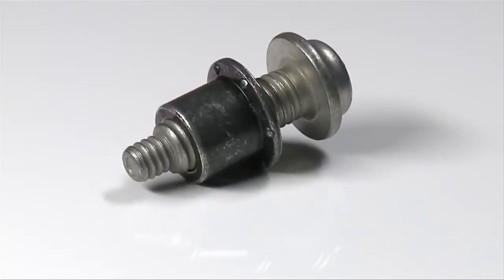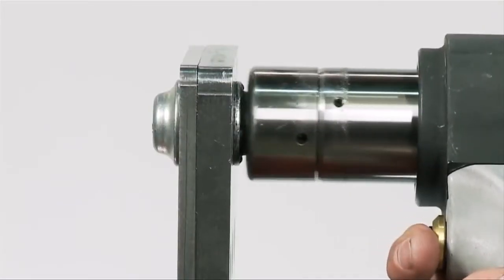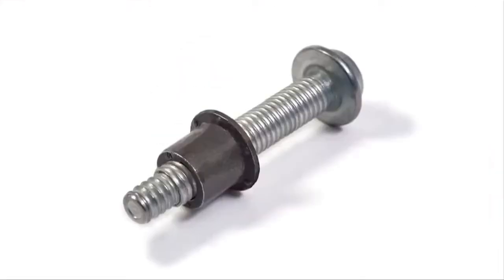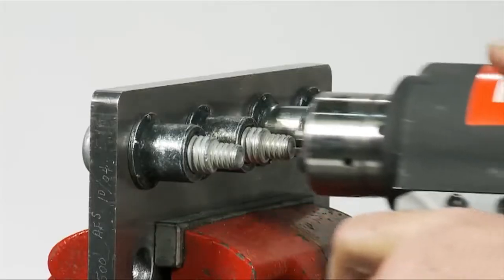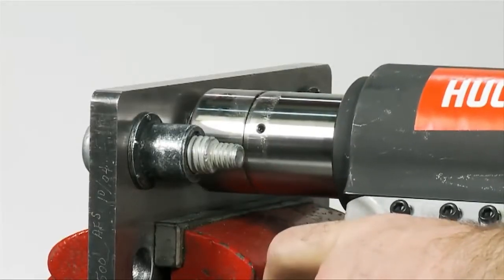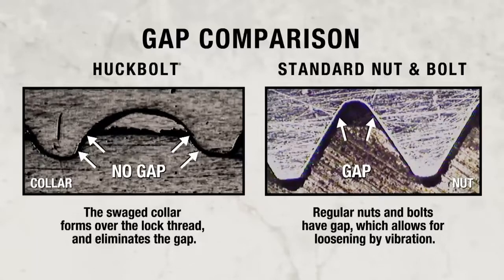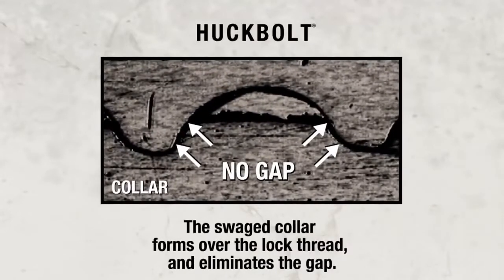Huck fasteners are designed from the ground up to stop vibration in its tracks. Huck fasteners are engineered to be installed with direct tension and swaging. This installation method helps ensure that huck bolts eliminate the gaps that can be a potential source of loosening. It also provides full metal to metal contact between the swaged on collar and the pin.